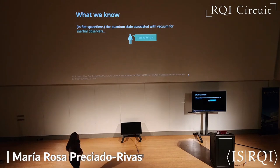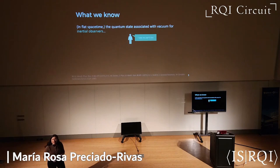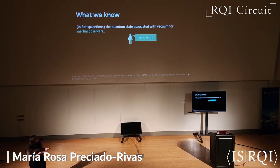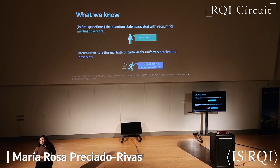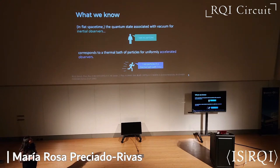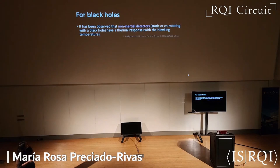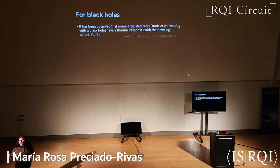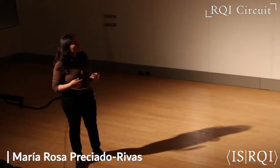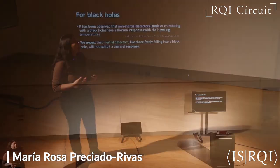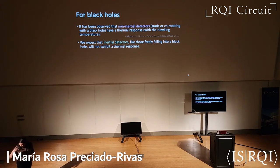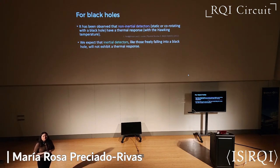There are a few things that we have learned using these quantum detectors. One of those is that for a flat spacetime, the quantum state associated with a vacuum — that is, with no particles — for an inertial observer, shows a thermal bath of particles for an accelerated observer. Moreover, the temperature of these particles will be proportional to their acceleration. In the case of black holes, we have learned that for non-inertial detectors, like those that are static or that co-rotate with a black hole, they will show this thermal response.